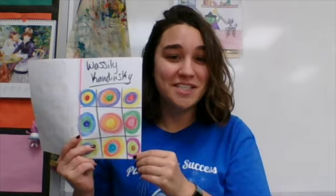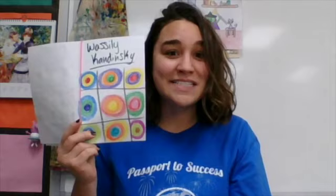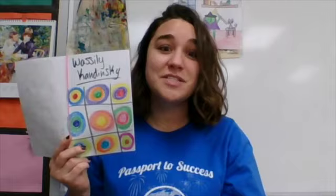Let me tell you what I'm looking for in this week's assignment. You are going to be turning in your Wassily Kandinsky page. I'm looking for three things: the title Wassily Kandinsky — that's one; your squares and your circles — that's two; and it needs to be colored, because this is a color segment — that's three. You can turn this in as a picture or as a short video.